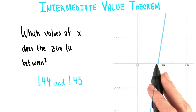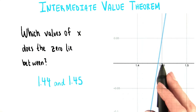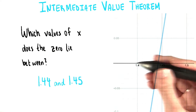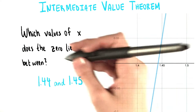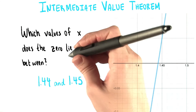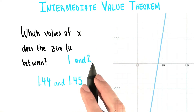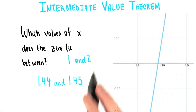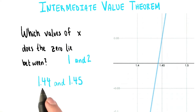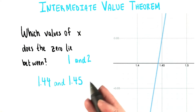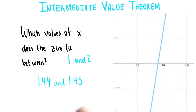The zero lies between 1.44 and 1.45. Now remember, we started out just knowing that the zero was between 1 and 2. That's a pretty huge range considering how precise or how accurate we've gotten now.